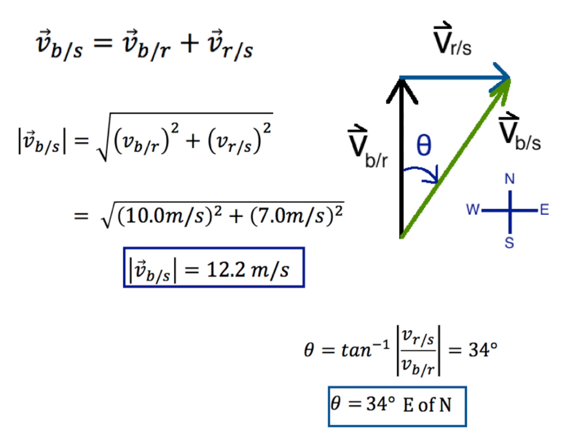Before the next problem, I want to emphasize: this picture — the triangle — is how you solve the problem. Once you have the triangle, all the math is really easy. Many of you could simply read the problem, see that the boat is going straight across while the river drags it downstream, draw the triangle, and work the problem directly without needing the ball-train-ground analogy at all. You don't have to use it if you don't need it, but it can be very helpful.